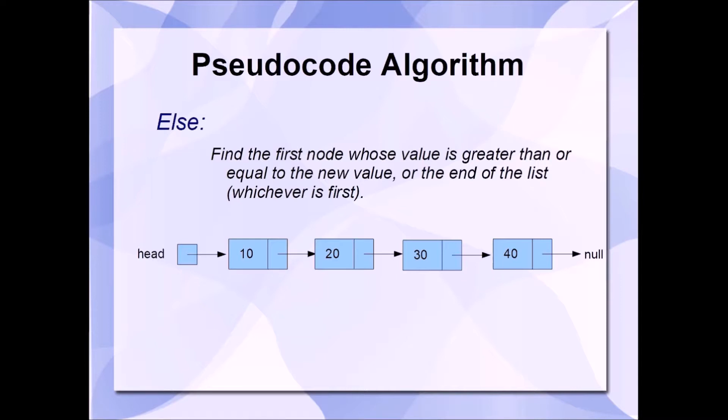To find the insertion point, we're going to need to have two pointers. We'll call one of them prev, and we'll initialize prev with the memory address of the head node. The second pointer we'll call curr, and we'll initialize that with the memory address of the node immediately following the head node. We will have a loop that is going to continuously advance these pointers so long as curr is not null,